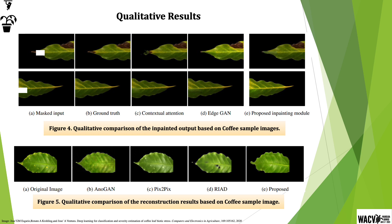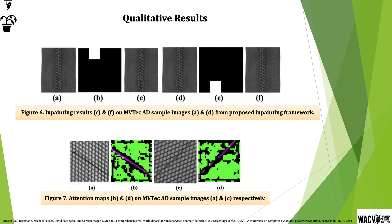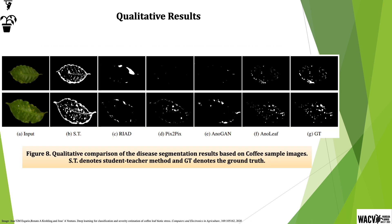The Pix2Pix method relies on an assumption that disease progression only leads to changes in leaf color, and this simplistic assumption may prevent its applicability on diseases with textural and shape changes. In contrast, AnoLeaf does not rely on disease characterization priors and was also utilized on the MBTEC anomaly detection dataset. Weakly supervised methods shown in Figure 8b result in misclassification of veins as disease regions.